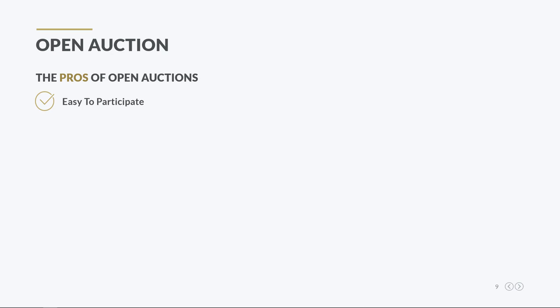Obviously, there are many pros and cons of trading ad inventory through open exchanges. When it comes to advantages, both advertisers and publishers can easily participate in open auctions without engaging in any direct deal, so it's less hassle to participate. New publishers with a small number of ad spaces and low website traffic can easily sell their ad inventory in open auctions, get found by advertisers, monetize their website, and potentially engage in direct deals in the future. Moreover, publishers who participate in open auctions can still control their ad inventory, choosing what types of ad creatives can be placed on their websites. They can also blacklist particular unwanted advertisers.